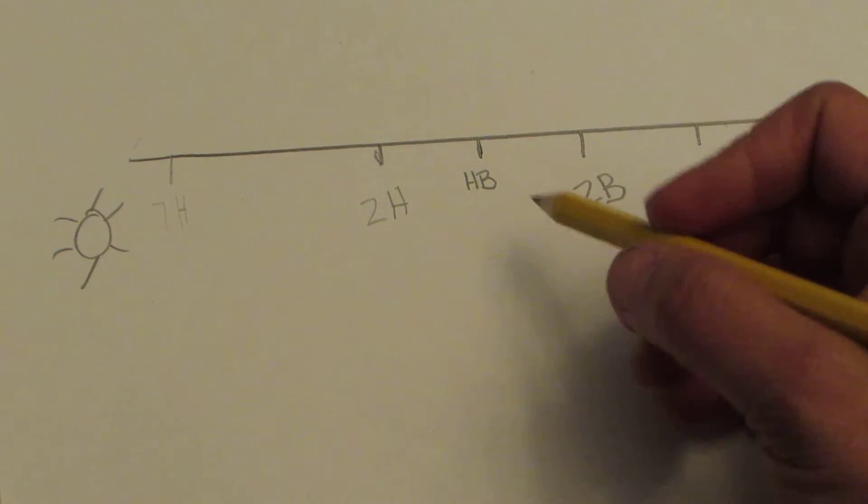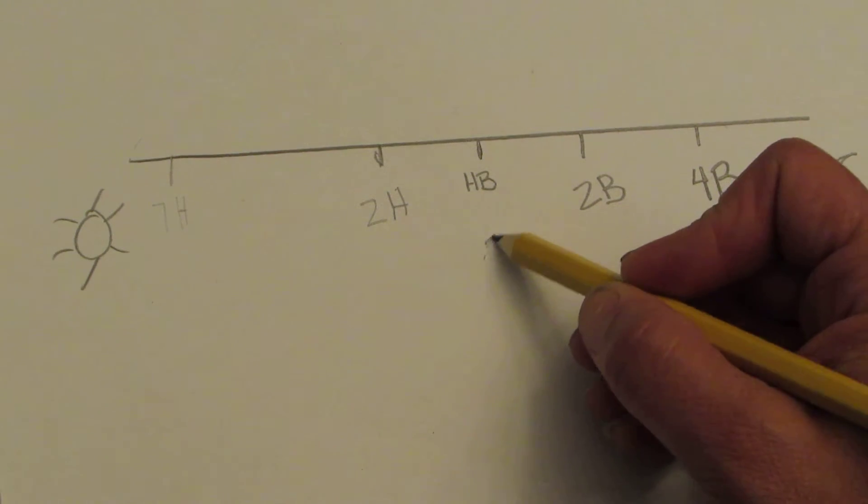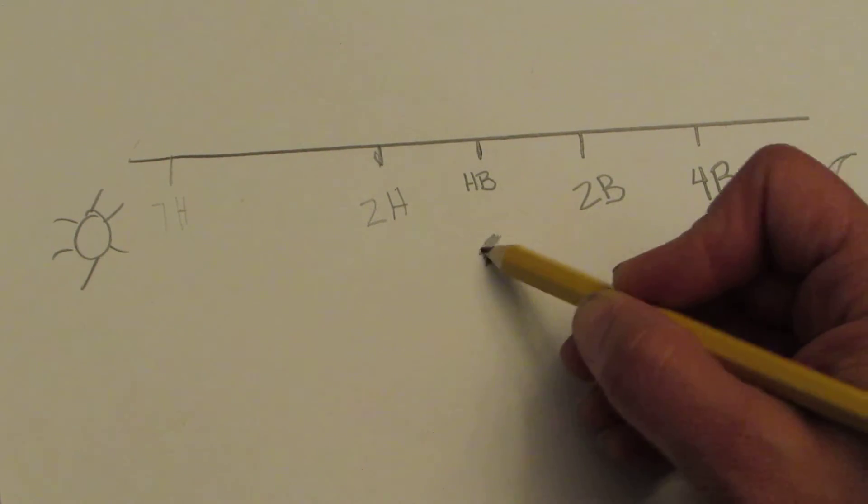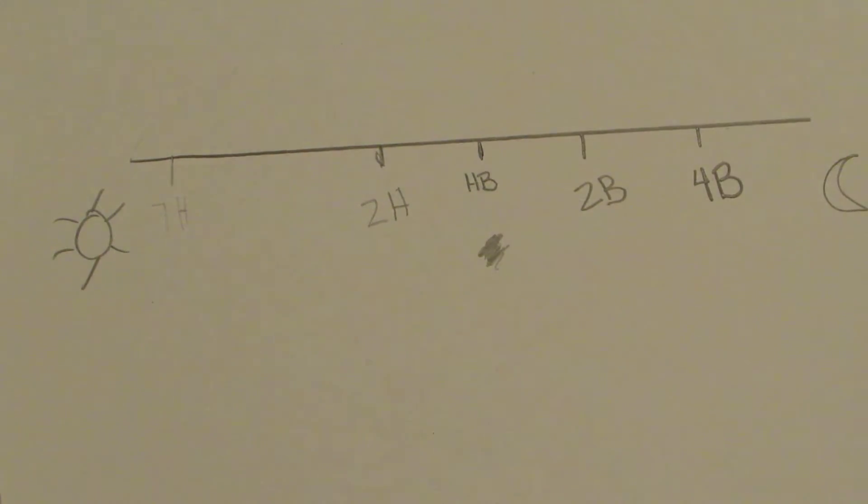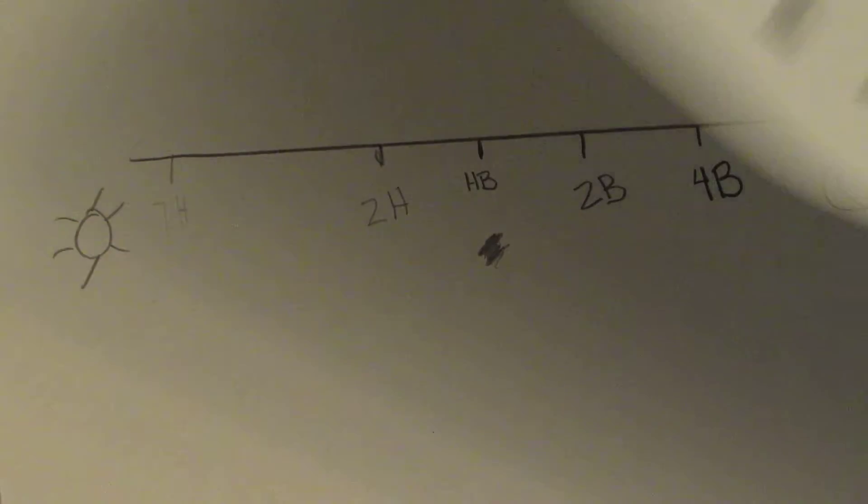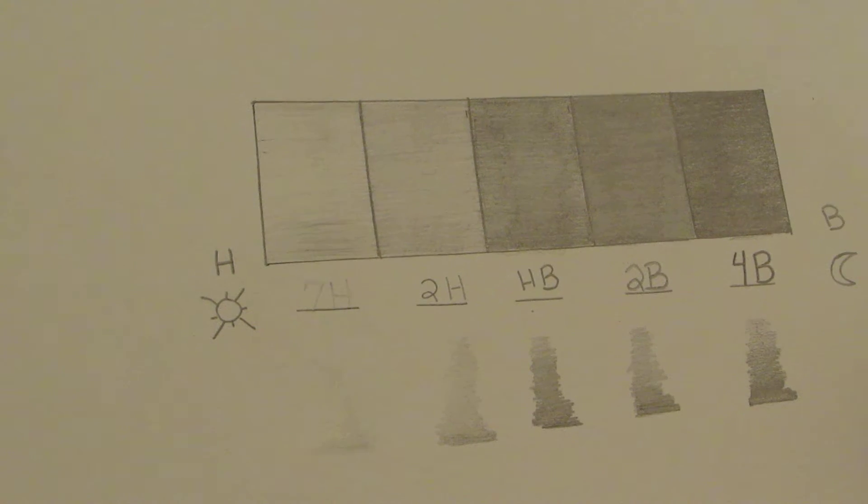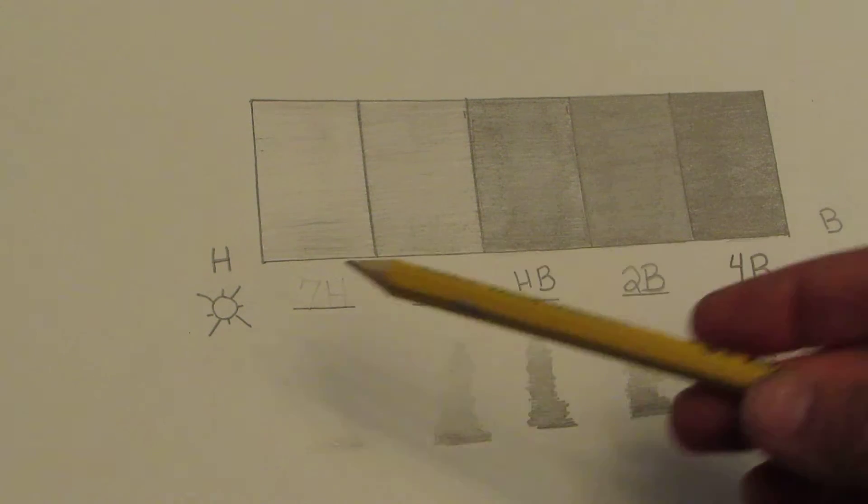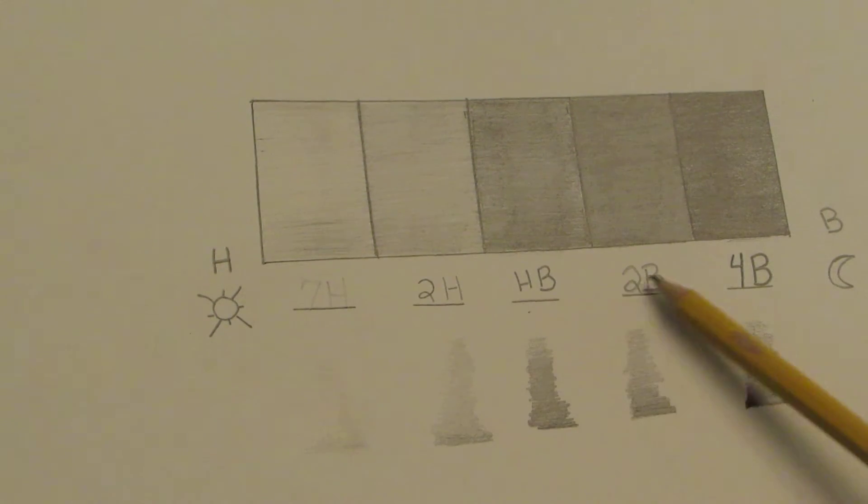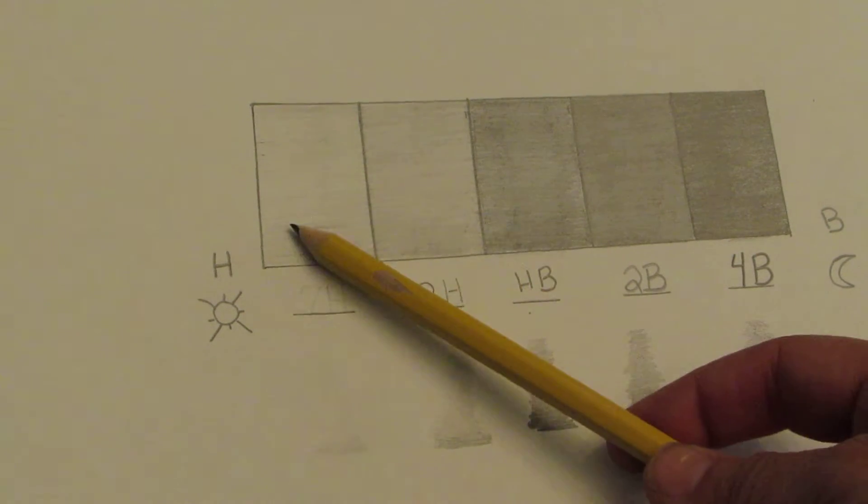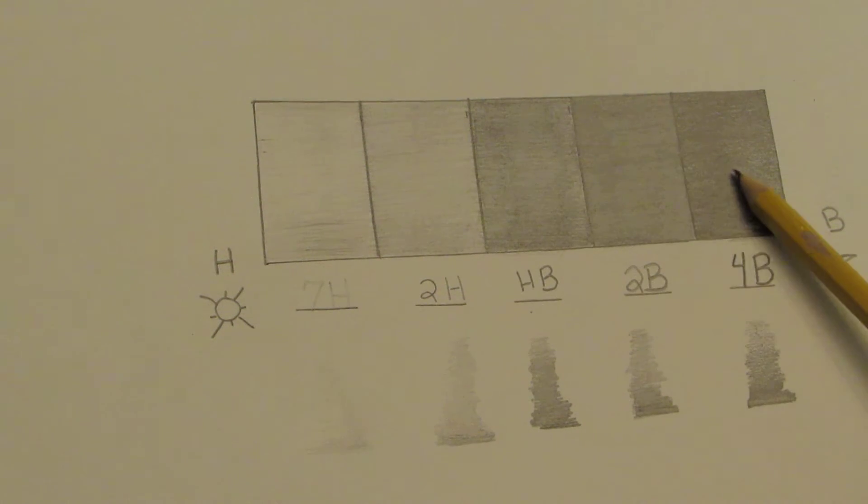So today, what you're going to do is you're going to do your value scale. With your value scale, you're going to give all of these a try. Something else that you're going to need to do: after you have figured out what pencil you have in your pack, which all the packs are not created the same, then what you're going to do is go ahead and shade those in to the corresponding spot.